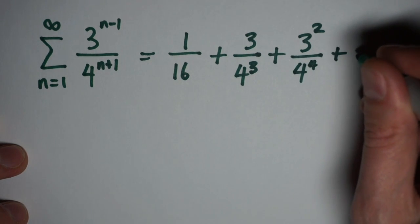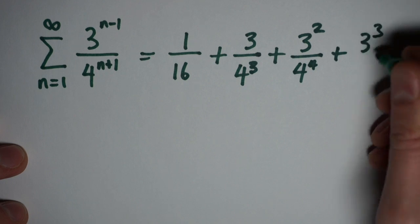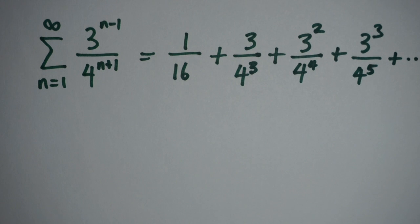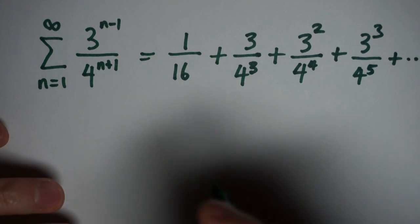And you can see the pattern as it goes on from here. The next one will be 3 cubed over 4 to the 5th, and so on from there. So this is geometric because I'm only dealing with the powers being the things that change.